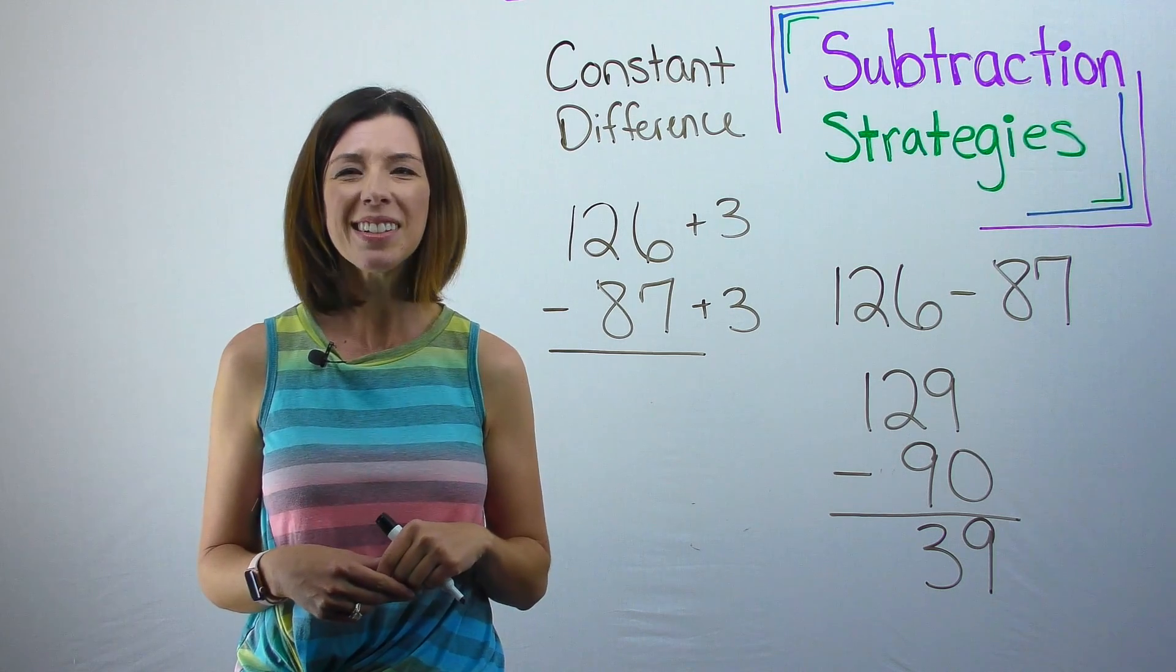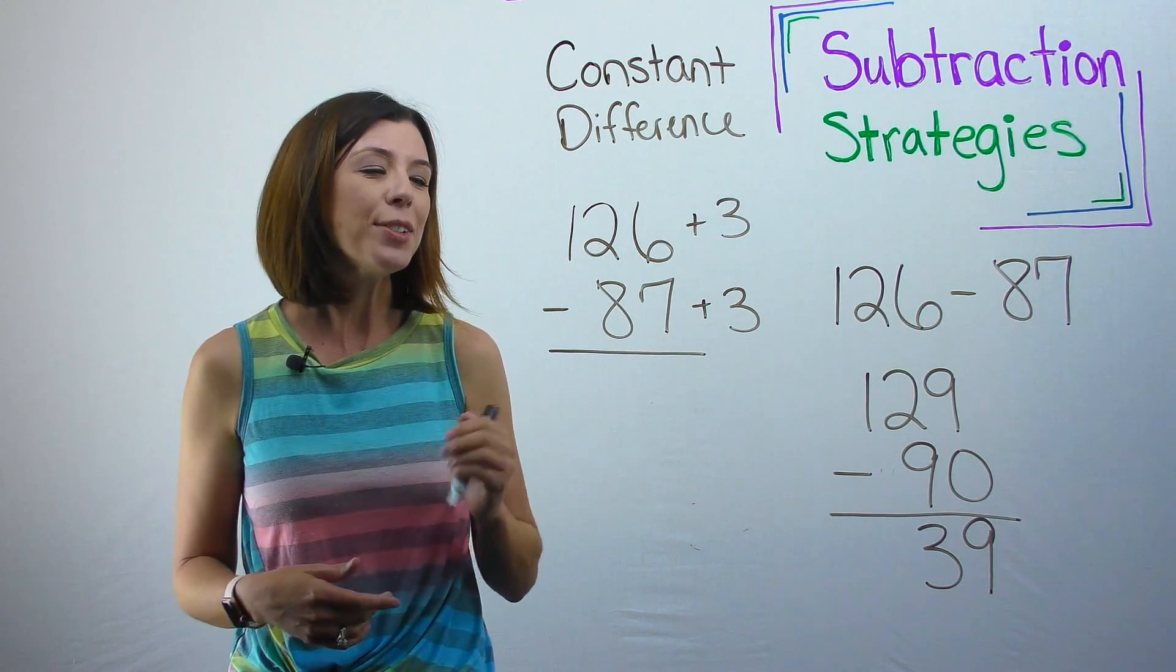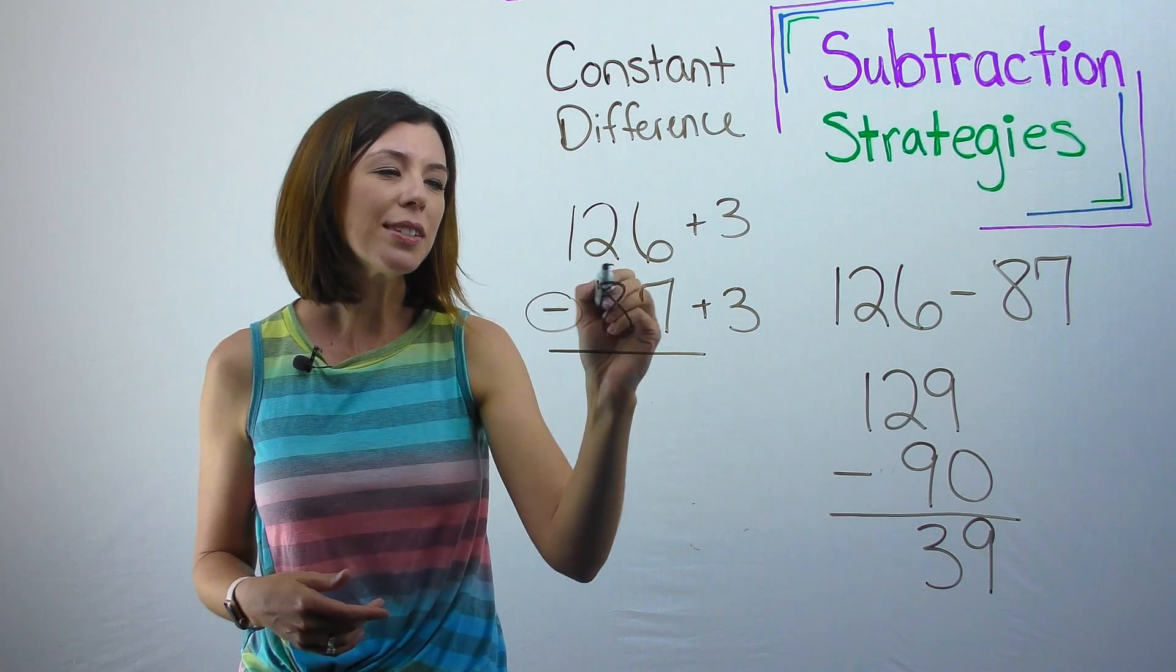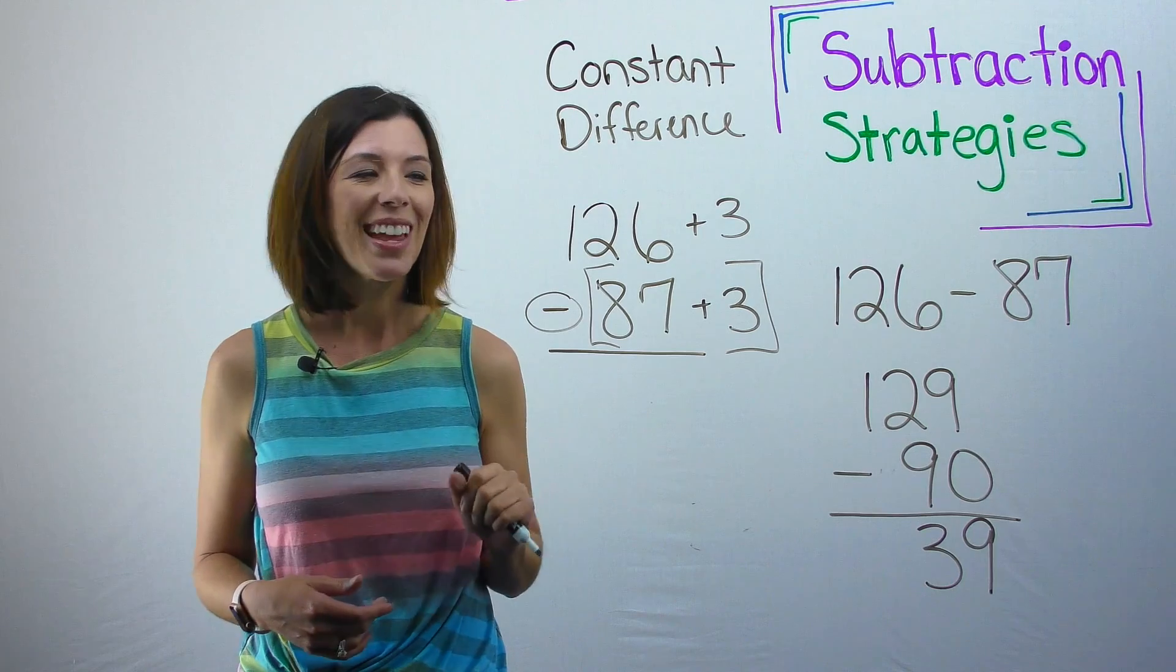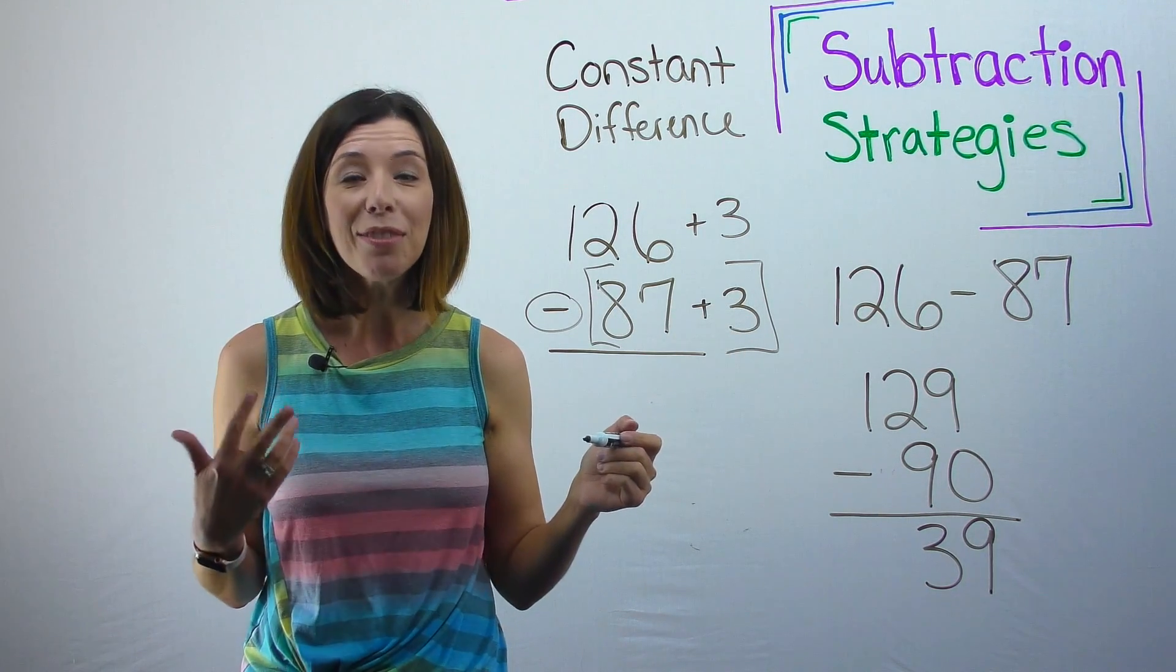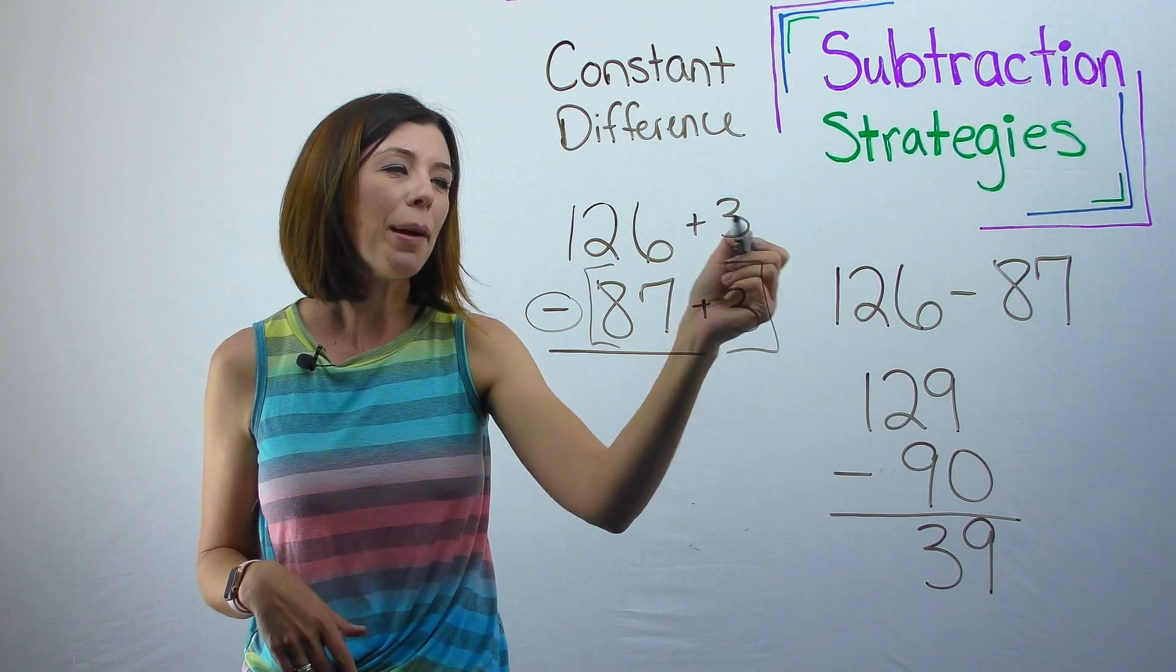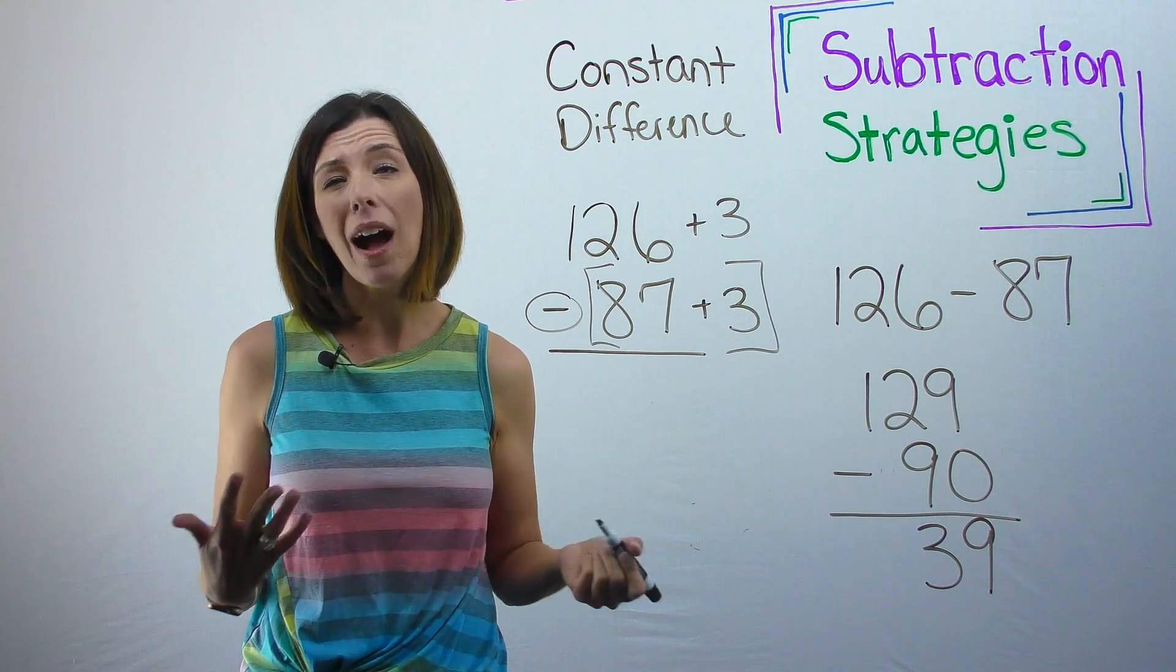Now you might be thinking, how does that work? How does it work? You added three and added three. Well, it turns out we're actually subtracting both of these numbers here. So really, this is coming in as a negative three, if you want to think about that. So I have a positive three and a negative three, which would give me a zero pair. This is why it works.